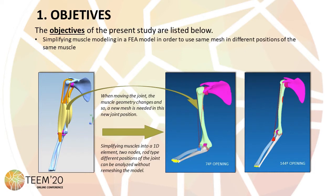The analysis of muscles by means of the finite element method has been carried out on several occasions. However, their treatment has been based on the use of 3D elements that are supported by the real geometry of the muscle. The main problem that occurs is that the muscles, being a geometry that varies during the travel of the joint, require that the muscles be meshed for each of these positions, which makes it impossible to obtain a unique finite element model that can be used for various positions.